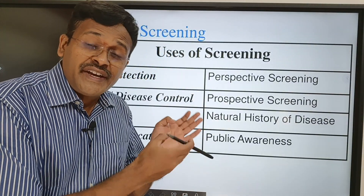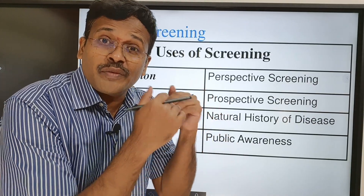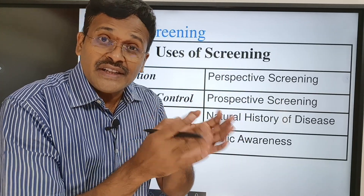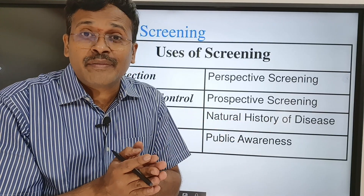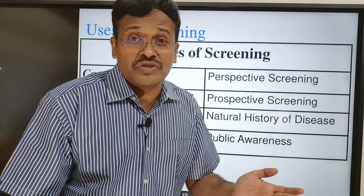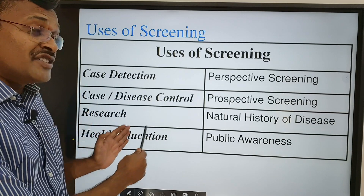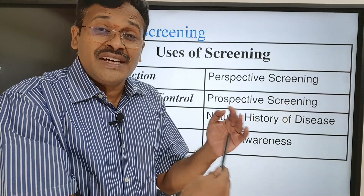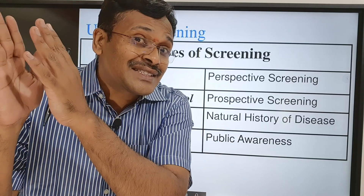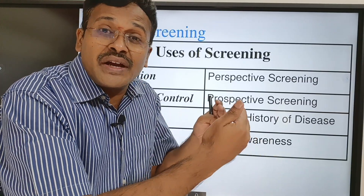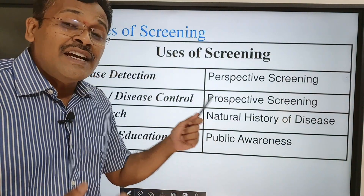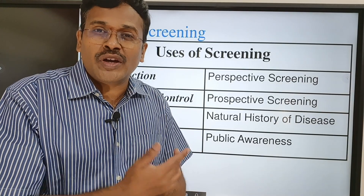Next is retrospective screening, where people are screened for the benefit of others. For example, immigrants coming from a tuberculosis-endemic area must be screened properly before being allowed into the country; otherwise, people in our country will get affected. Screening immigrants for tuberculosis is an example of retrospective screening. Screening is also used for research to understand the natural history of diseases, mainly chronic diseases like hypertension and cancer — to understand when cancer started, when it began growing, and when it manifested. Additionally, raising public awareness and giving health education during screening programs is another important use of screening.